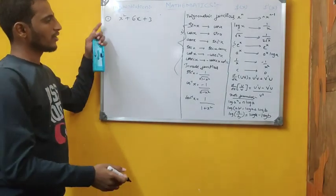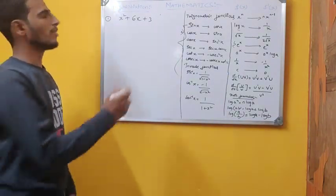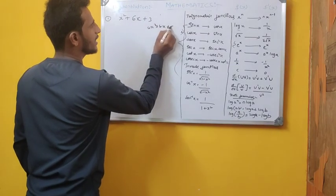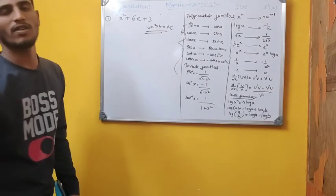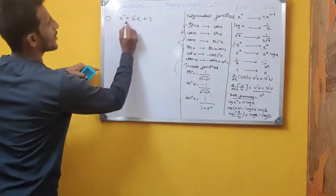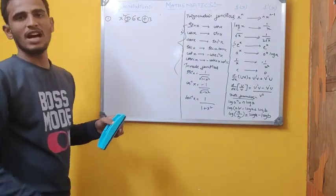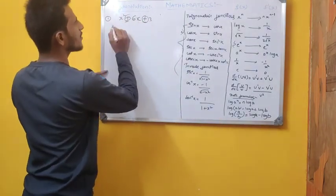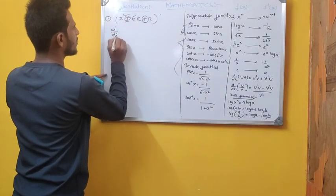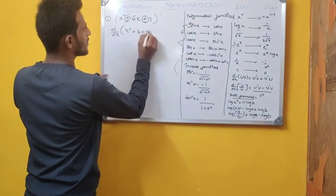You know the algebraic function — it's in the form of a quadratic equation ax² + bx + c. In this example, the given function is x² + 6x + 3. We separate each term using the addition operation and apply d/dx to each.